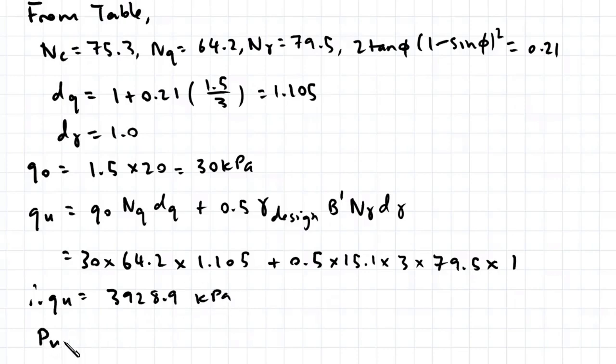And converting this to a load, that's just qU multiplied by our effective area. So 3928.9 multiplied by the width which is 3 meters, multiplied by a unit length of 1. So this gives us 11,786.7 kN per meter run.